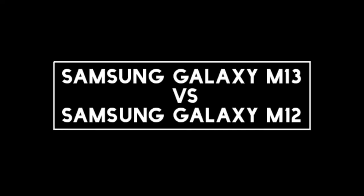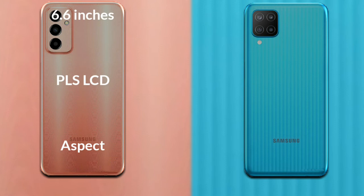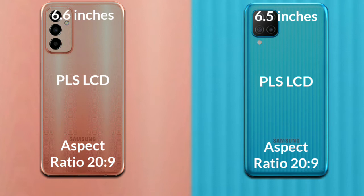I will compare the new Samsung Galaxy M13 with Samsung Galaxy M12. Let's talk about the display. Samsung Galaxy M13 has a 6.6-inch HD+ PLS LCD with an aspect ratio of 20:9. Samsung Galaxy M12 has a 6.5-inch HD+ PLS LCD with an aspect ratio of 20:9.